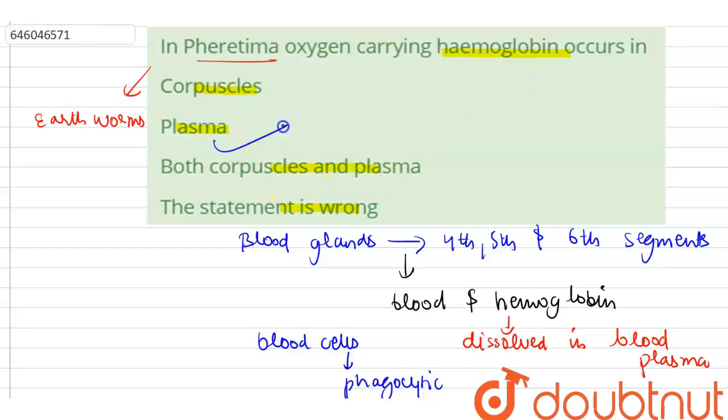So the correct option is plasma, not corpuscles, not both corpuscles and plasma. The statement is wrong - all the options are incorrect as corpuscles or cells are phagocytic in nature. So the correct option is plasma. Thank you. For class 6-12, IIT-JEE and NEET level, trusted by more than 5 crore students, download